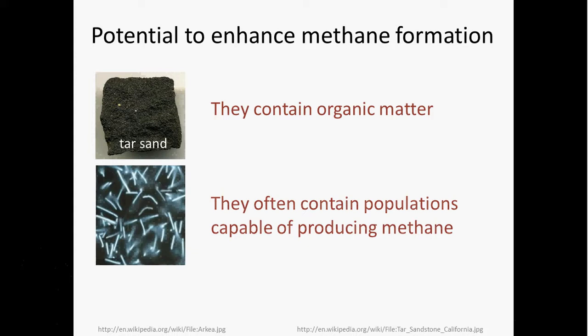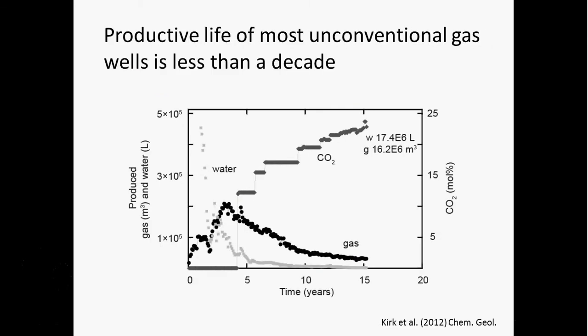So the food is there and the microbes are there. We don't really know how rapidly they currently are producing methane, but it's clear that they're not producing it at nearly the rate at which we're pulling it out. The productive life of most unconventional gas wells is relatively short — in the Powder River Basin in Wyoming, for example, it's usually only about seven to eight years. Here's an example from the Antrim Shale in the Michigan Basin: methane gas production increases pretty rapidly and then starts to tail off within about a decade. If we could figure out how to enhance growth of methanogens, that would potentially lengthen the productive life of these wells.